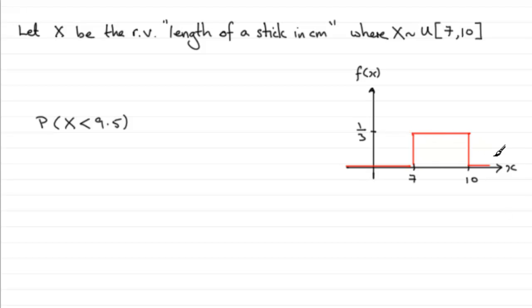It's going to be somewhere over here. If this is 9.5, then the probability is given by the area to the left of 9.5.